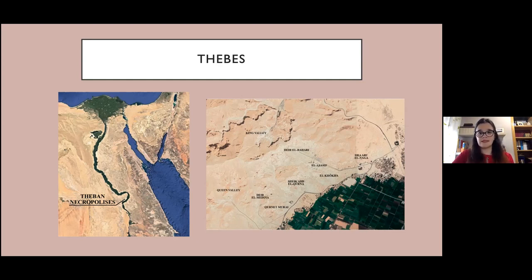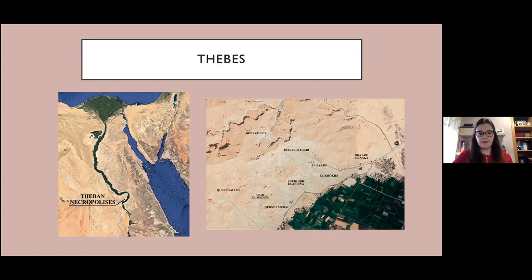Deir el-Medina is the southernmost area and was the village of the workers of the royal tombs. Its necropolis was created at the beginning of the 18th dynasty. Sheikh Abd el-Qurna is the central section of the Theban necropolis and one of the most important areas with the largest number of tombs of the 18th dynasty. Its upper part was the first to be occupied and was used until the reign of Amenhotep III, when the tombs became more complex and the availability of space was less, so the lower level of the hill was occupied. Another important area is Dra' Abu el-Naga to the north, where we find tombs of the Middle Kingdom, the second intermediate period, and the New Kingdom. In the areas of El-Khokha and El-Asasif there are tombs of the 18th dynasty, although there are also tombs of other periods.